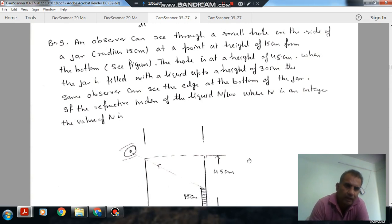Question number 9: An observer can see through a small hole on the side of a jar, radius 15 cm, at a height of 15 cm from the bottom. The hole is at a height of 45 cm. When the jar is filled with liquid up to a height of 30 cm, the same observer can see the edge at the bottom of the jar.